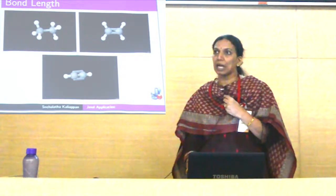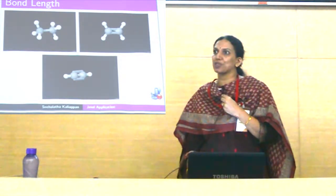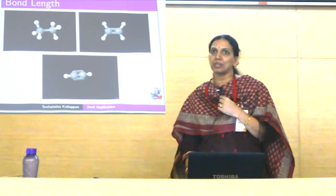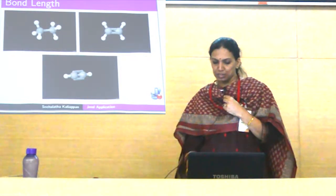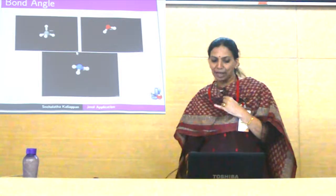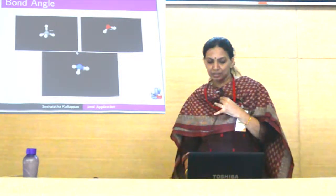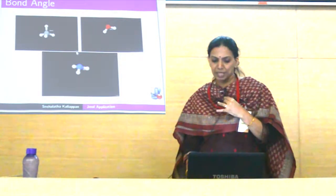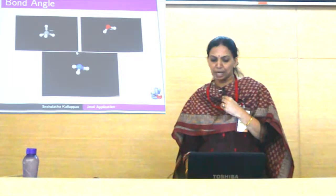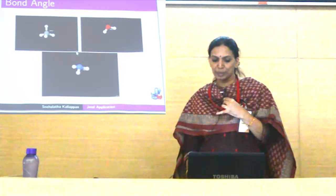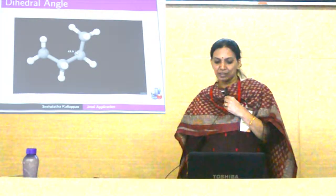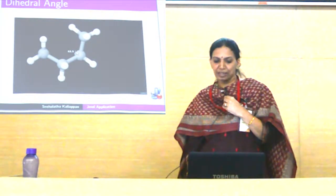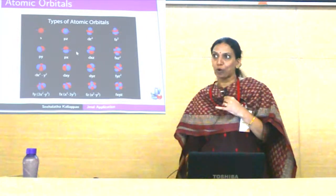Then you can measure bond lengths for single, double, and triple bonds. You can take the slide and show your students how the bond length changes with single, double, and triple bonds. Bond angle — that is SP, SP2, and SP3 hybridization. You can also show steric repulsion and how the bond angle changes with steric repulsion. And you can show chemical agents.